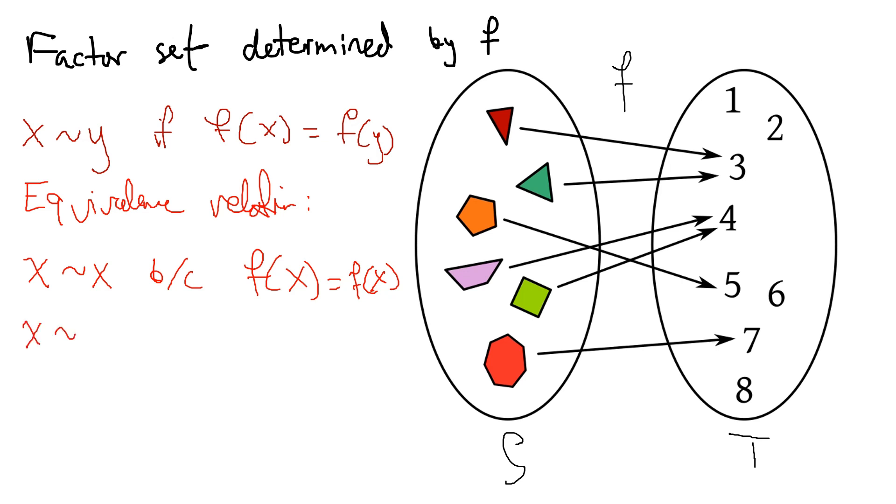If x is equivalent to y, then f of x is equal to f of y. But equality is symmetric. So that means that f of y is equal to f of x. And so this relation here is symmetric.